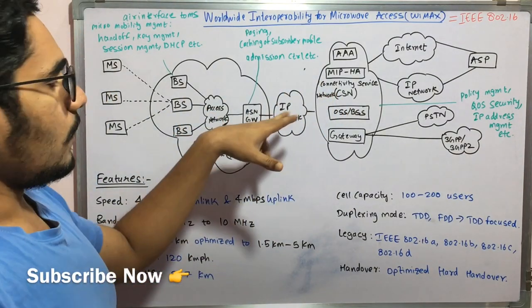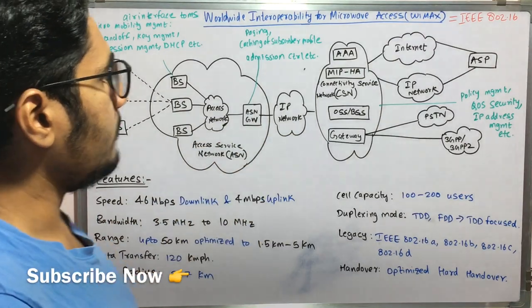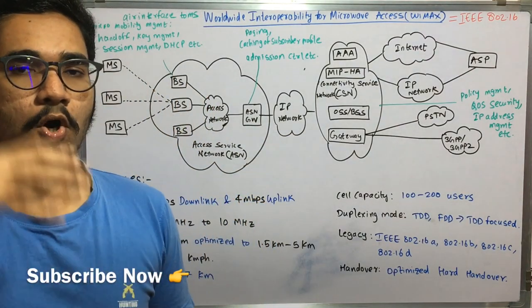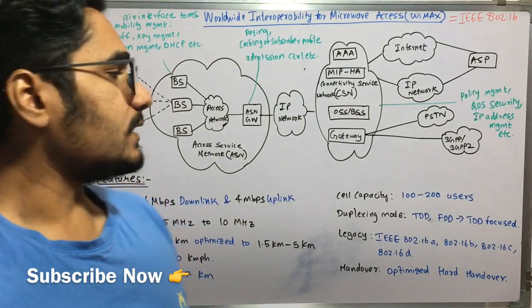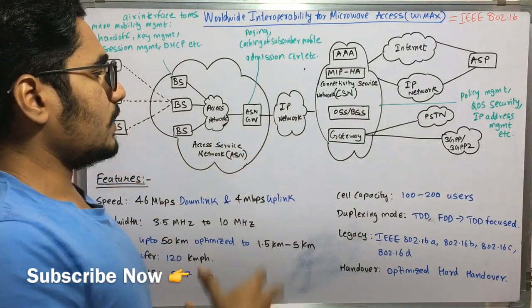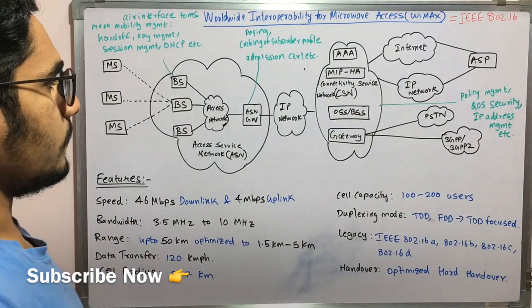Then further we move on, we have this IP network. So IP network is basically consisting of all the list of IP addresses which are there, all the whitelisted IPs which are there, which are just triggered for forwarding of all the requests.